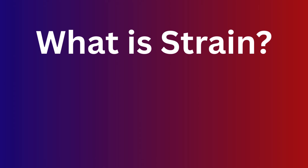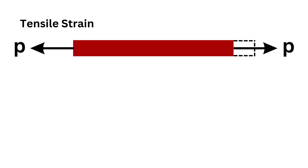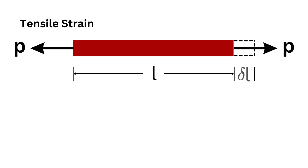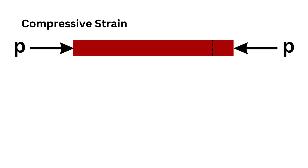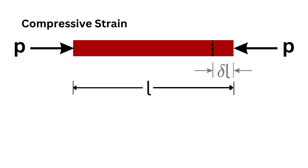What is strain? When a bar with uniform cross-section is subjected to a uniform axial tensile stress, it will increase its length. The increment of length is the actual deformation of the bar; the fractional deformation is known as tensile strain. Under compressive force, a similar bar would be reduced in length, and the fractional deformation is known as compressive strain.